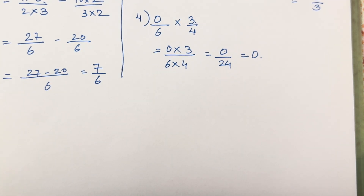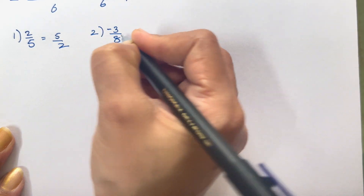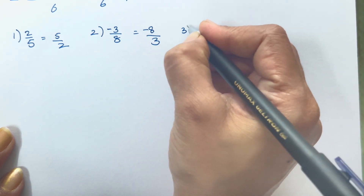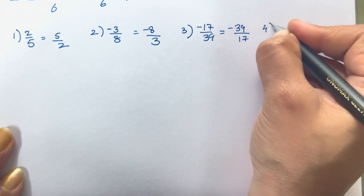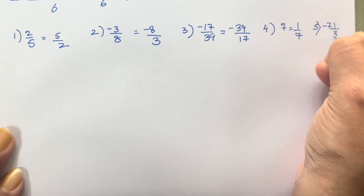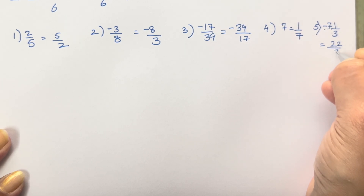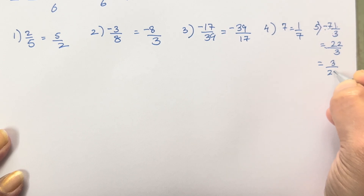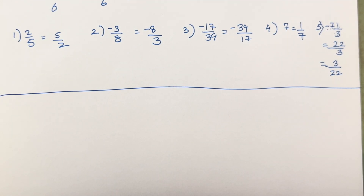Now let's look at writing the multiplicative inverse. Multiplicative inverse means we write the reciprocal of the number. So 2/5 becomes 5/2. Minus 3/8 becomes minus 8/3. Minus 17/39 becomes minus 39/17. 7 becomes 1/7. And minus 7 and 1/3 — first convert to improper fraction, then take the reciprocal with the minus sign remaining.